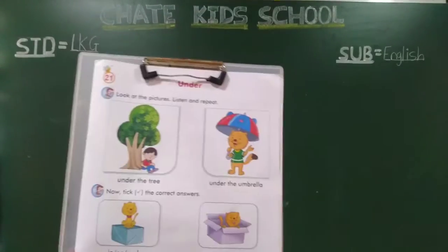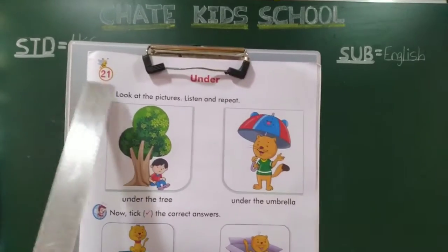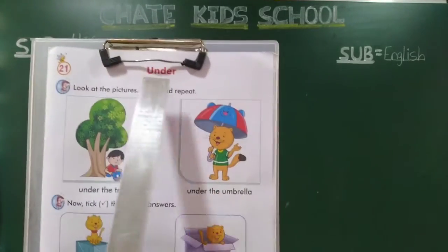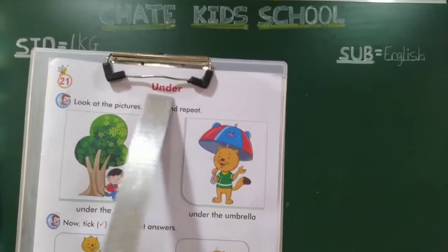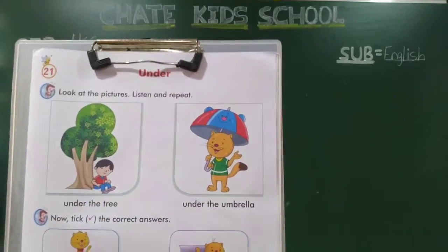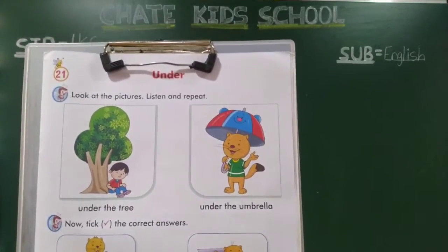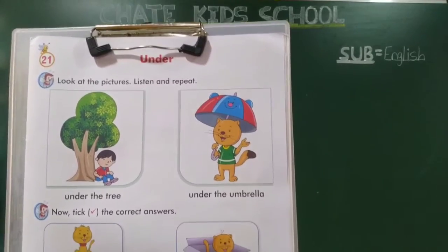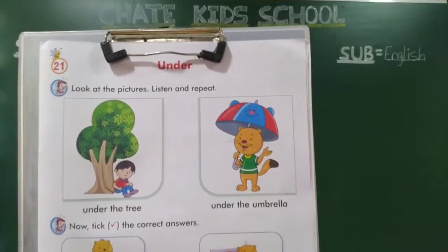Next, we learn lesson number twenty one — U-N-D-E-R, under. Okay? Under manje kai? Cha khali. Vastu cha vastu cha khali. Okay?